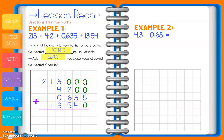When we're adding large stacks of numbers like this, all we do is add straight down the column and be careful as we carry. First column: 0 + 0 + 5 + 0 = 5. Second column: 0 + 0 + 3 + 4 = 7. Next column: 0 + 2 + 6 + 5 = 13. So we put our 3 down and carry the 1.